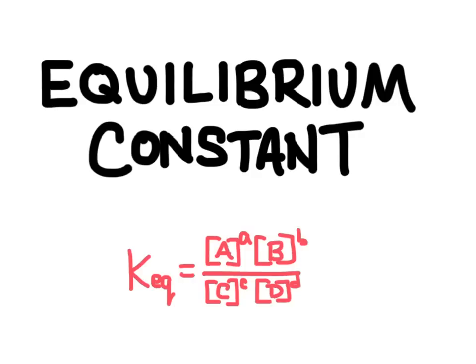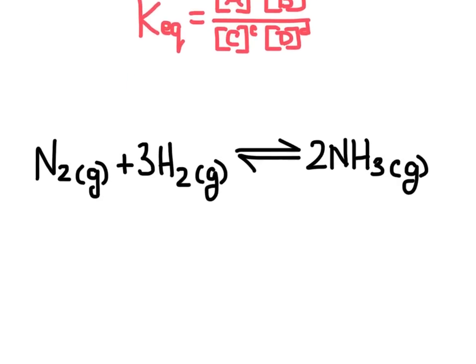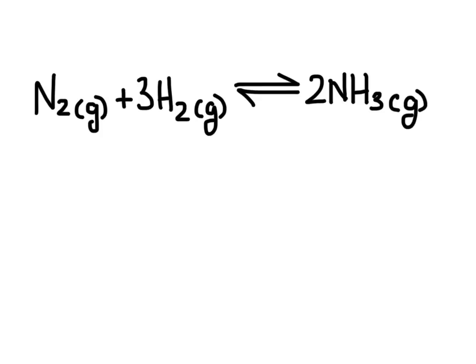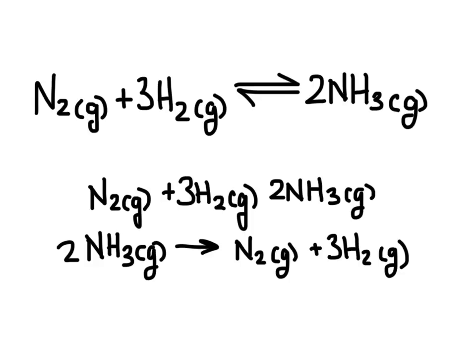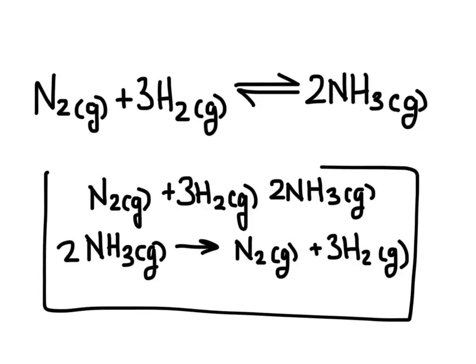In this video we're going to learn about equilibrium constants. A lot of chemical reactions are reversible, which means the reactants can be converted into products and then the products can be converted back into reactants. We represent reversible reactions with a reversible arrow going both directions. So one reaction is really just two reactions — the forward reaction happening at the same time as the reverse reaction.